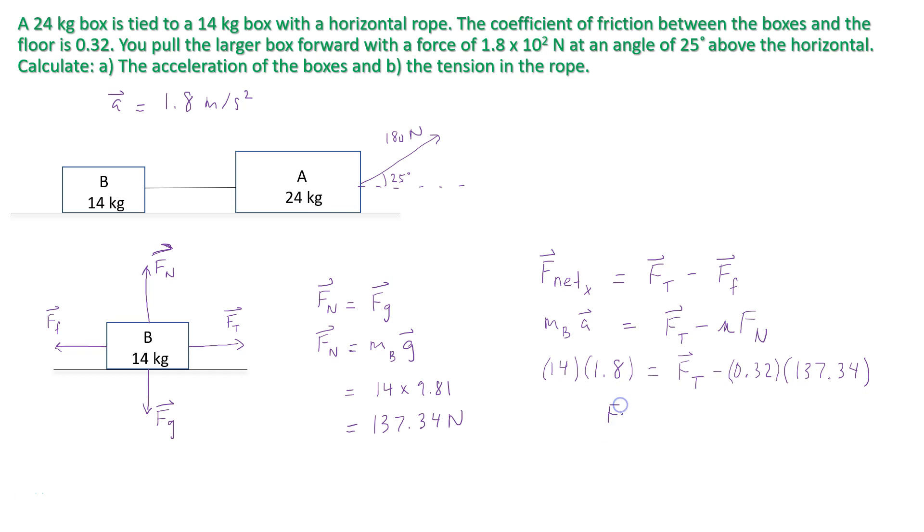Ft ends up equaling approximately 69 newtons. And so therefore the tension in the cable, or in this case in the rope, between the two boxes would be 69 newtons.